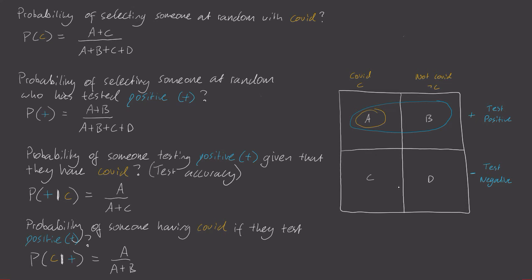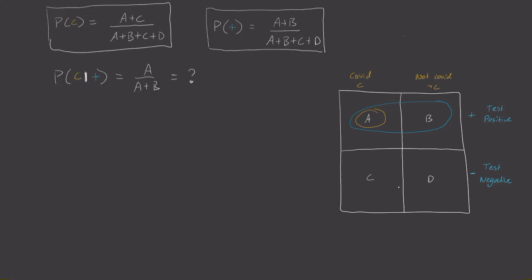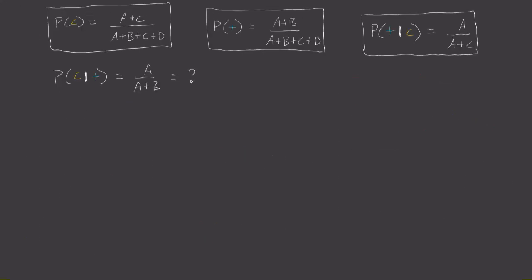Okay, now let's derive Bayes' theorem. Using algebra, let's see if there's a way we can find this probability purely in terms of the other probability expressions we just derived. Well, I can write this as A divided by A plus C times A plus C divided by the total number of people times the total number of people divided by A plus B. Notice this really is the same because you can cross off these terms like this and get back to our original expression A divided by A plus B.